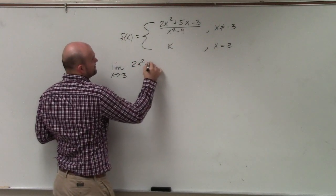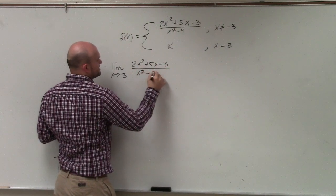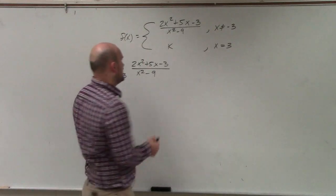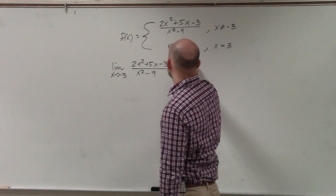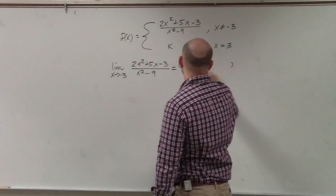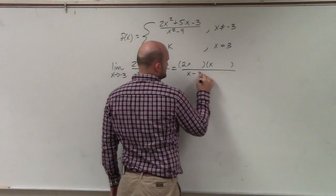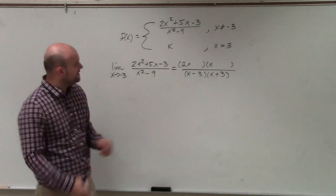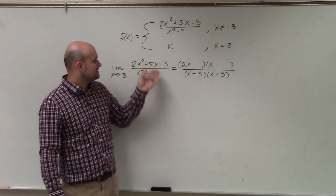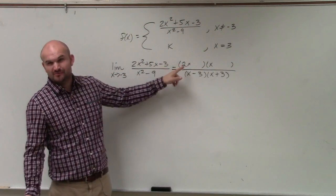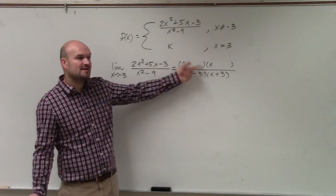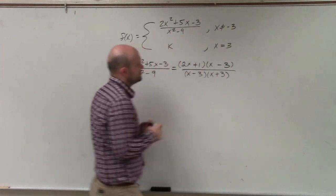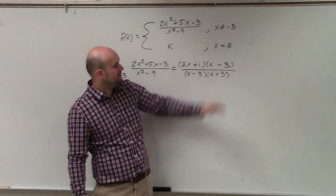So I have 2x squared plus 5x minus 3, all over x squared minus 9. Now we need to figure out our discontinuities — that's something you guys practiced in your last homework, as well as on our quiz. So you have to know how to factor. I can see my leading coefficient is a 2, so I know my factors are going to be 2x and x. I automatically see the denominator as a difference of two squares, which is easy to factor. I just need to figure out what two numbers multiply to give me negative 3 but add to give me 5. I know that 2 times 3 gives me positive 6, and x times negative 1 would subtract 1 and give me 5, and negative 1 times positive 3 is negative 3. So by factoring, I can see that my solution is right there — you can always verify your factoring by foiling it back out.